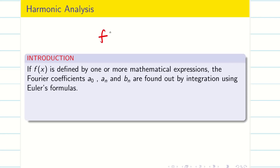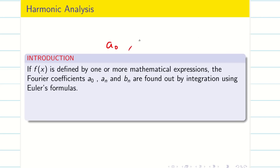In all the previous lectures, we saw f(x) as a mathematical function — x squared, mod x, x, etc. It might be defined as one or more mathematical expressions and we found the Fourier coefficients a0, bn, an, etc. But sometimes the function will not be given. In such situations, you will be given a graph or a table of corresponding values. The process of finding the Fourier series for a tabular form of numerical values is known as harmonic analysis.